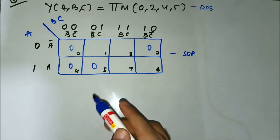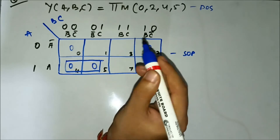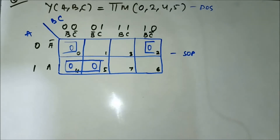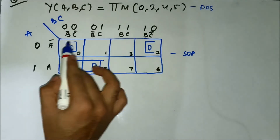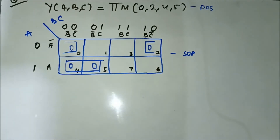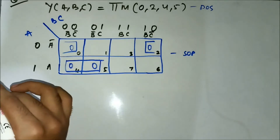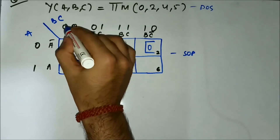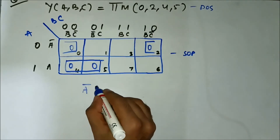Now we'll group them. Here we can form a pair, and then here we can form another pair. Now we have to find the common variables for each of these pairs. For the first pair, A̅ is common in the horizontal side in both marked cells. And in the vertical side, we have C̅ common. So this gives us A̅C̅.